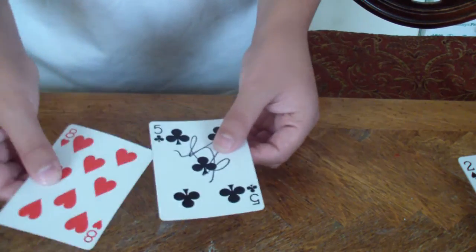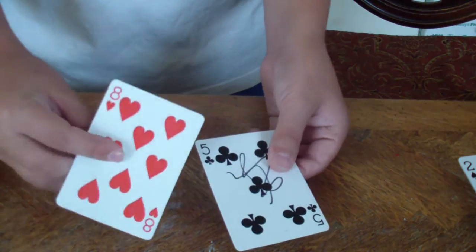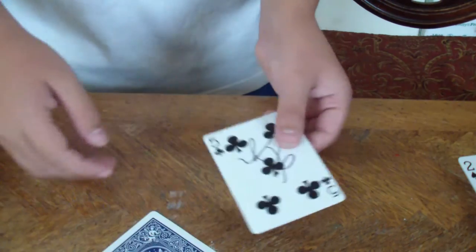Now what I'm going to do is I'm going to rub the top. I'm going to rub the bottom. I actually get the signature off this card and onto this card.